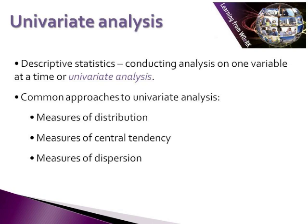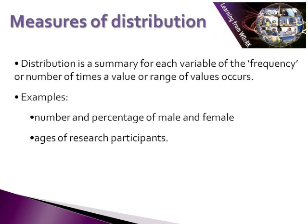We're going to describe and examine each one of these through the next few series of lectures. Starting with the first one — measures of distribution. What we're really looking at here is distribution as a summary for each variable of the frequency, or the number of times a value or range of values occurs. Examples of that might be the number and percentage of males and females, or the age of research participants.